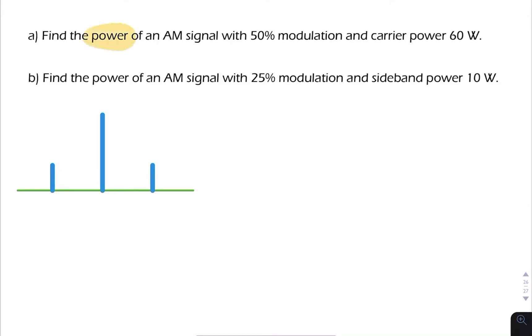Here we're asked for the power of an AM signal. We're given the carrier power and the modulation index. In the second part, we're given the sideband power and the modulation index. To be clear, when it says sideband power — unless it specifies the upper or lower sideband — the question means the total sideband power is 10 watts. To answer that, we need to use the relationship between the sideband power and the carrier power.